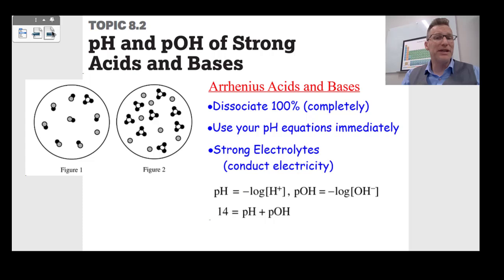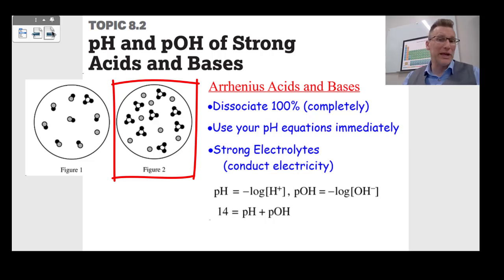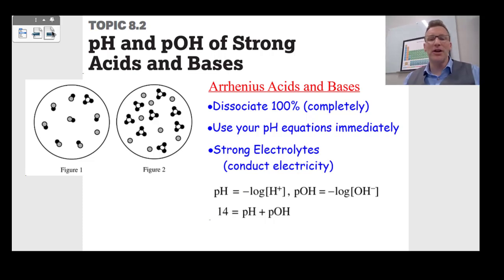Topic 8.2 is talking about the pH and pOH of strong acids and bases. We have to understand what strong acids and bases are. These are Arrhenius acids and bases, which means they dissociate 100% completely. Take a look at figure 1 and figure 2 — which is an Arrhenius acid? Which one breaks up into H+ and A− completely? That's figure 2. Figure 1 is still all together — that would be a weak acid. A strong acid ionizes 100%, and they will conduct electricity. They are strong electrolytes.